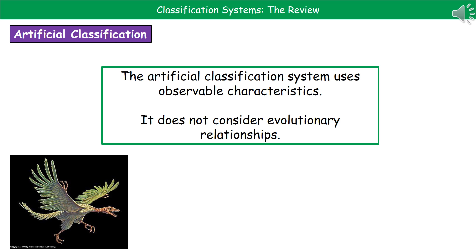There are two classification systems we could use. The first is called artificial classification. This system uses observable characteristics — the things you can actually see, such as does it have two legs or four legs, does it have wings. It doesn't consider any evolutionary relationships. A key problem is illustrated by the Archaeopteryx — a picture shown in the bottom left. It's extinct, it has wings so it should be a bird, but its head has no beak and looks more like a reptile. So it throws up the question of where do you put things like that?